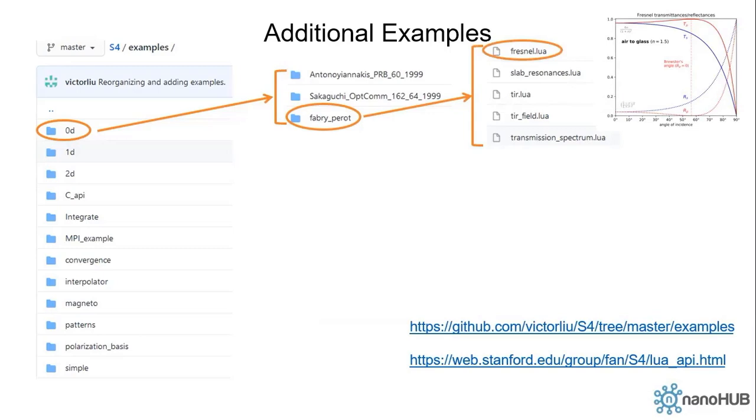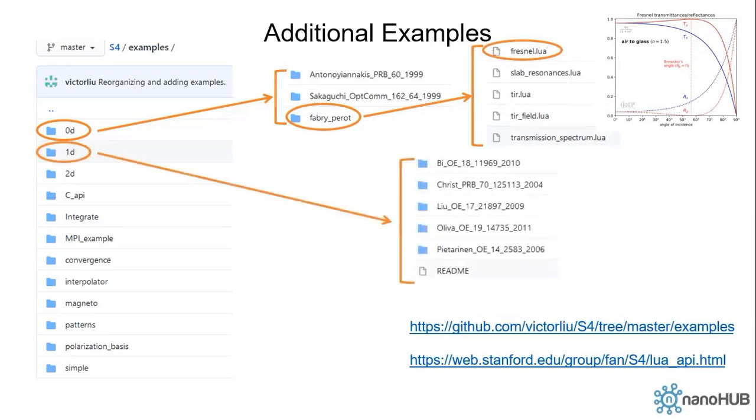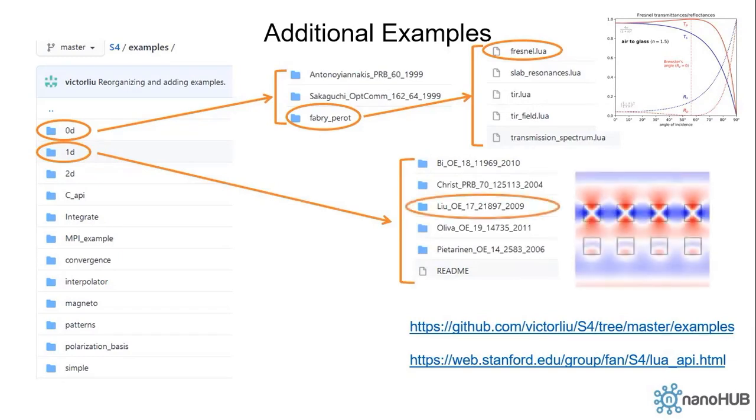If you go to the 1D folder, there are a few examples that reproduce research paper results that have 1D periodicity. If you go to this paper published on Optics Express, you will see that S4 can not only output reflectance and transmittance, it can even output the field pattern inside the structure.